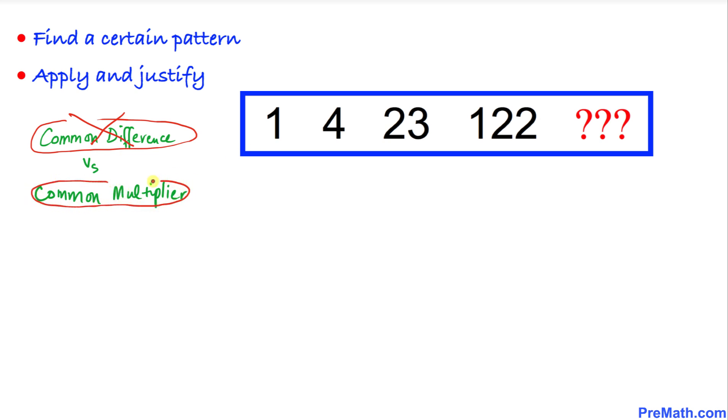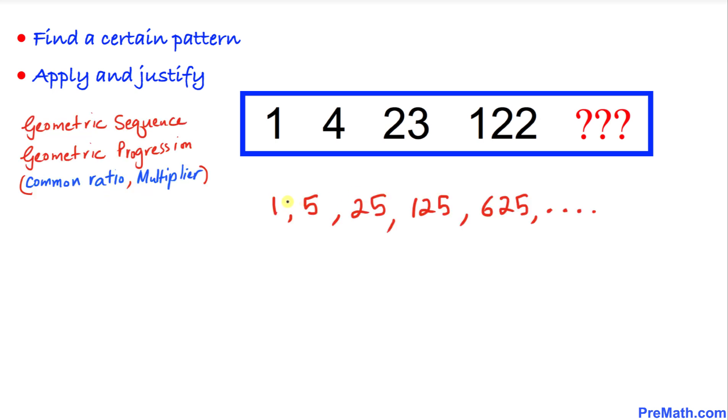Now let's recall this progression. We can see that 1, 5—if we multiply by 5 we are going to get the next number, and if we multiply again we get 25. Likewise, the common multiplier, or sometimes we call it common ratio, is 5. This kind of sequence is called a geometric sequence.